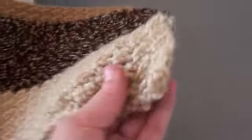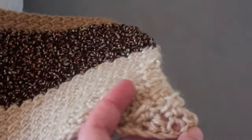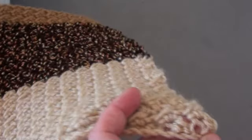Here, and then for row one, I've done a slip stitch into the third chain from the hook and then half double crochet into the next chain.